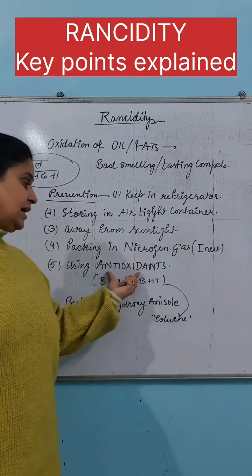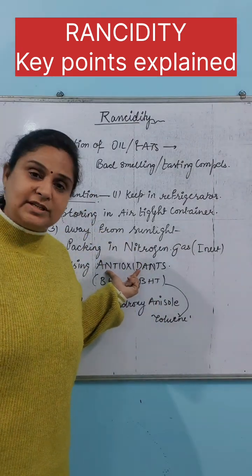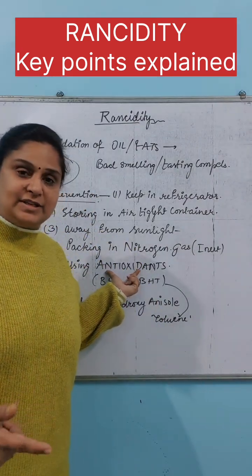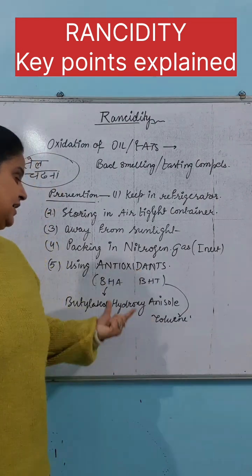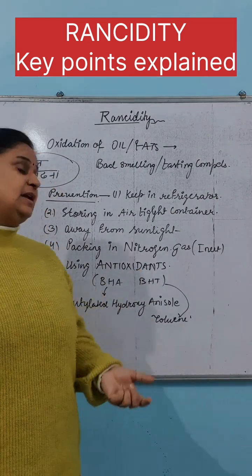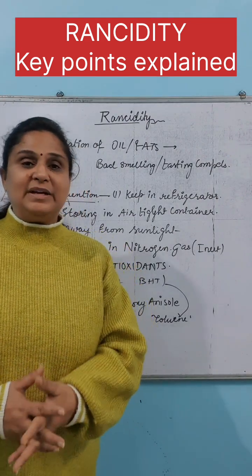Next is using antioxidants. Since rancidity is an oxidation reaction, if you add a reducing agent — these are called antioxidants — they will prevent the oxidation from occurring. Examples are BHA and BHT.